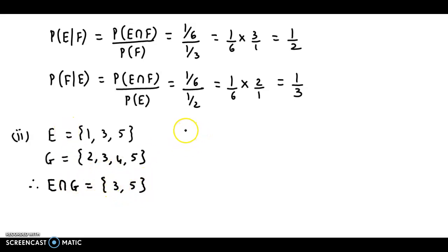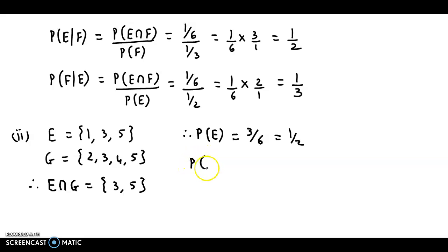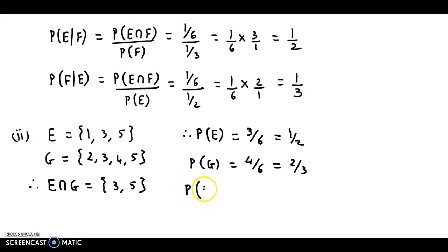The three probabilities can easily be found. Probability of E is 3/6 = 1/2. Probability of G: it has 4 elements, so 4/6 = 2/3. Probability of E intersection G: it has 2 elements, so 2/6 = 1/3.